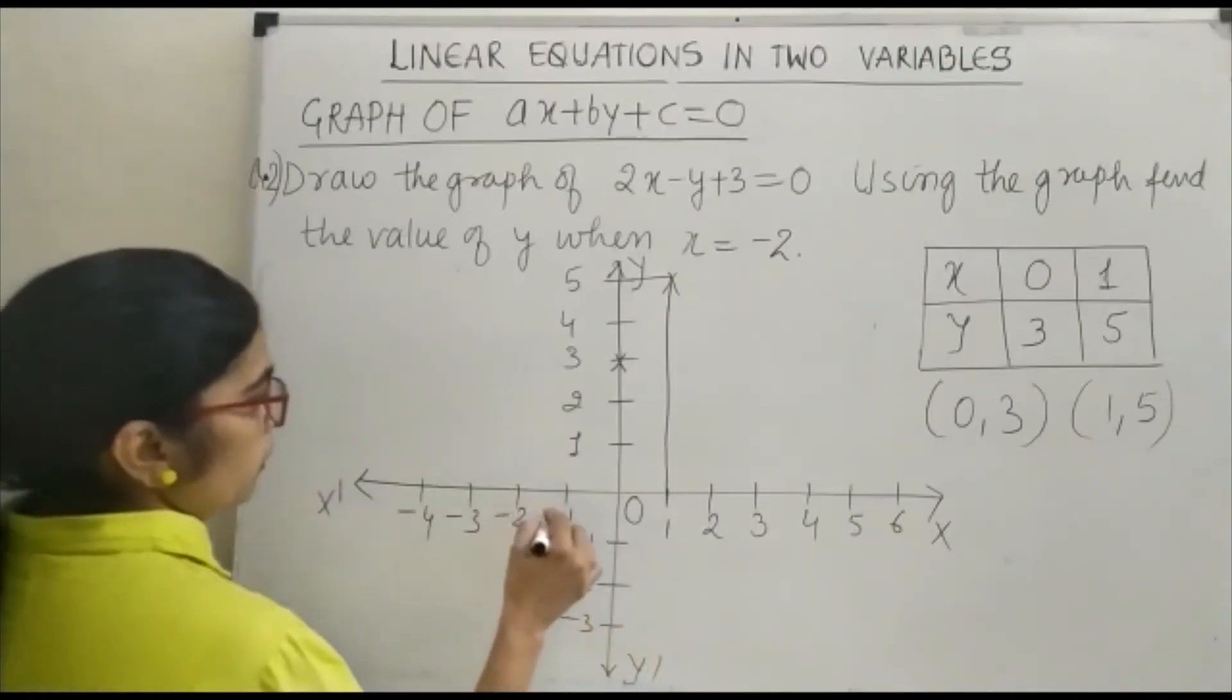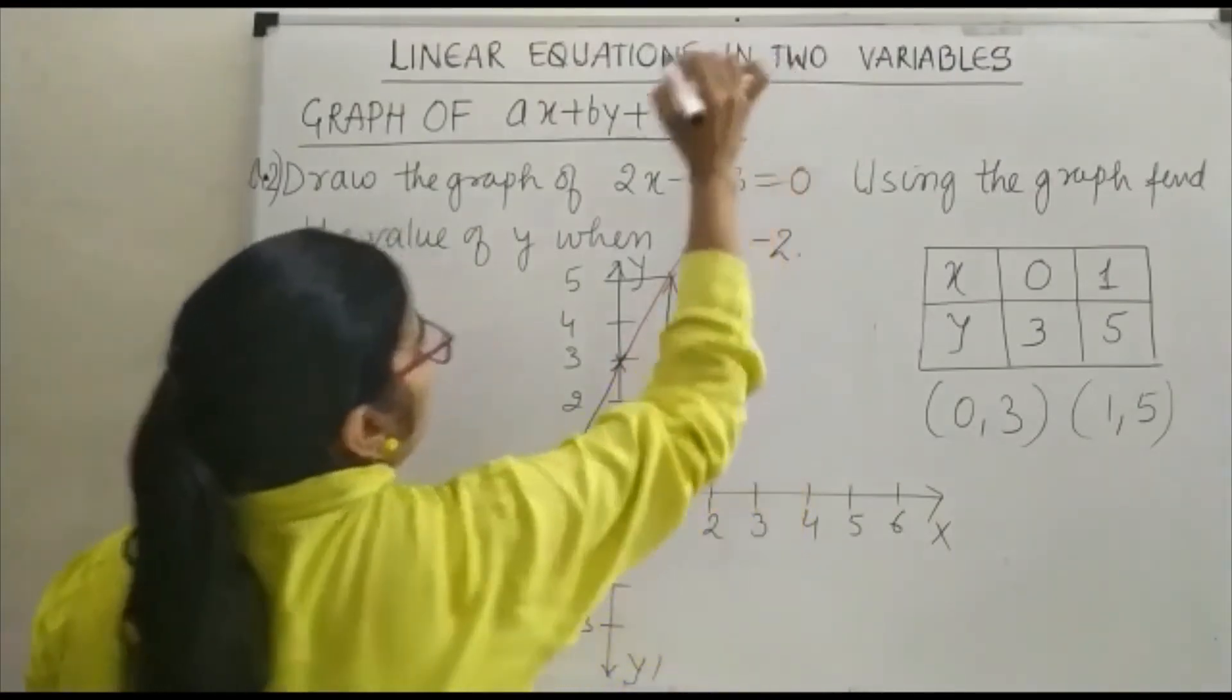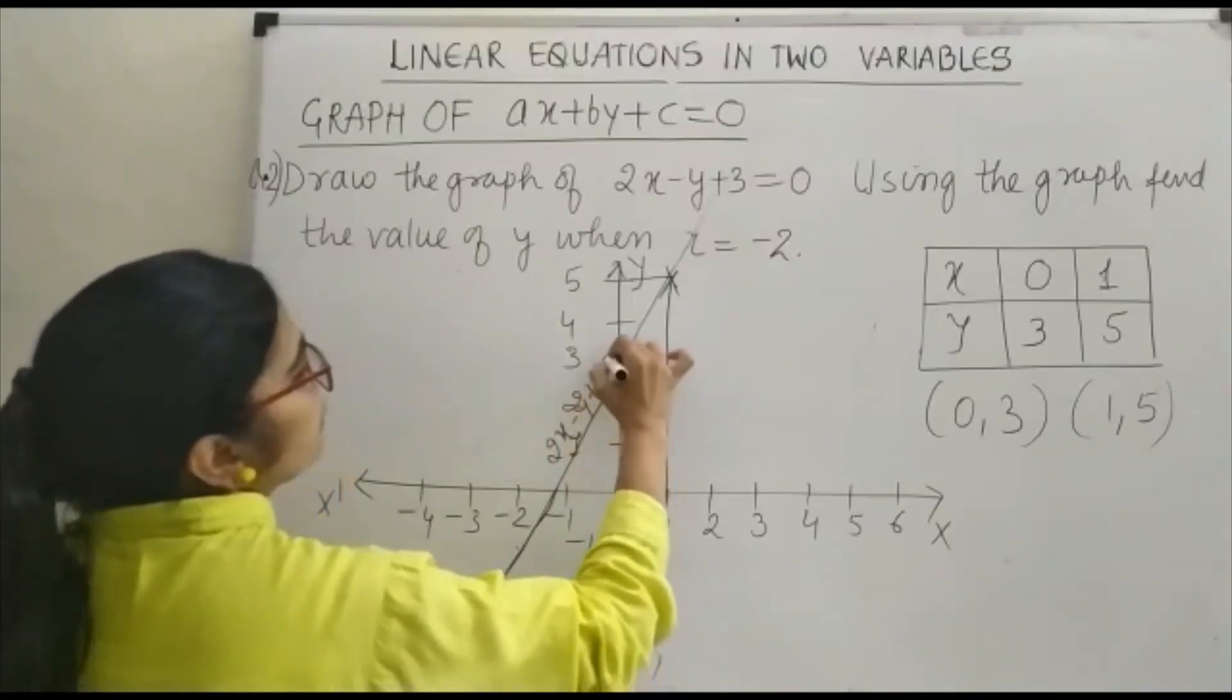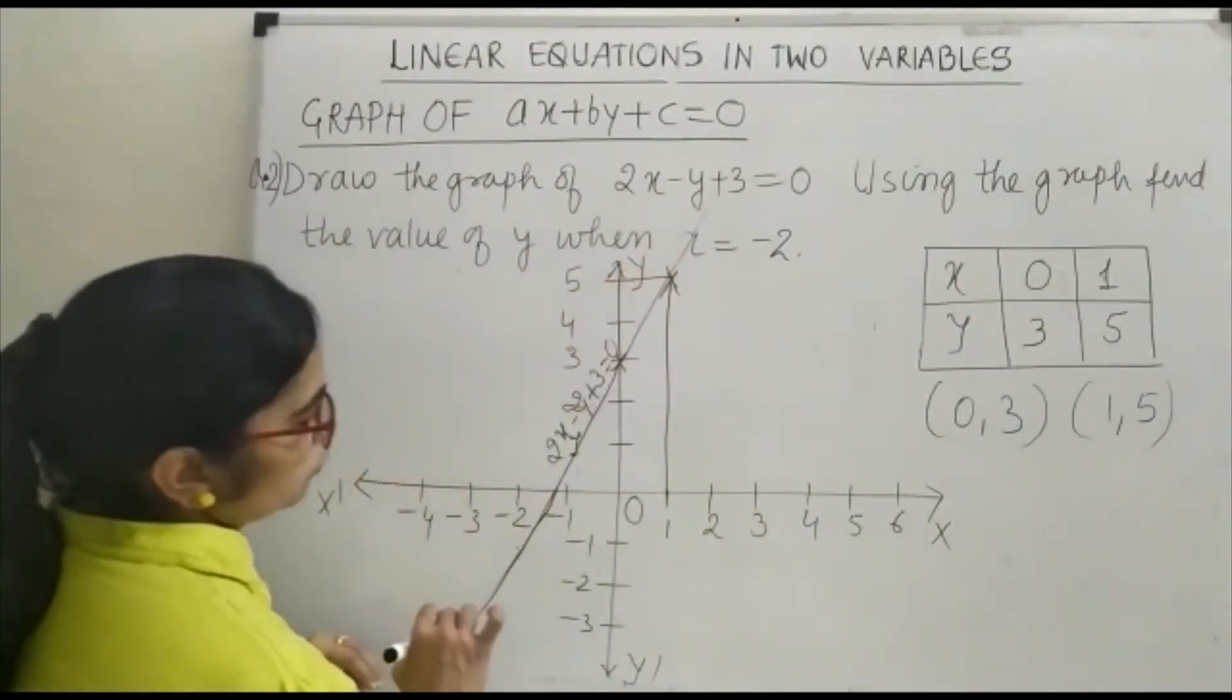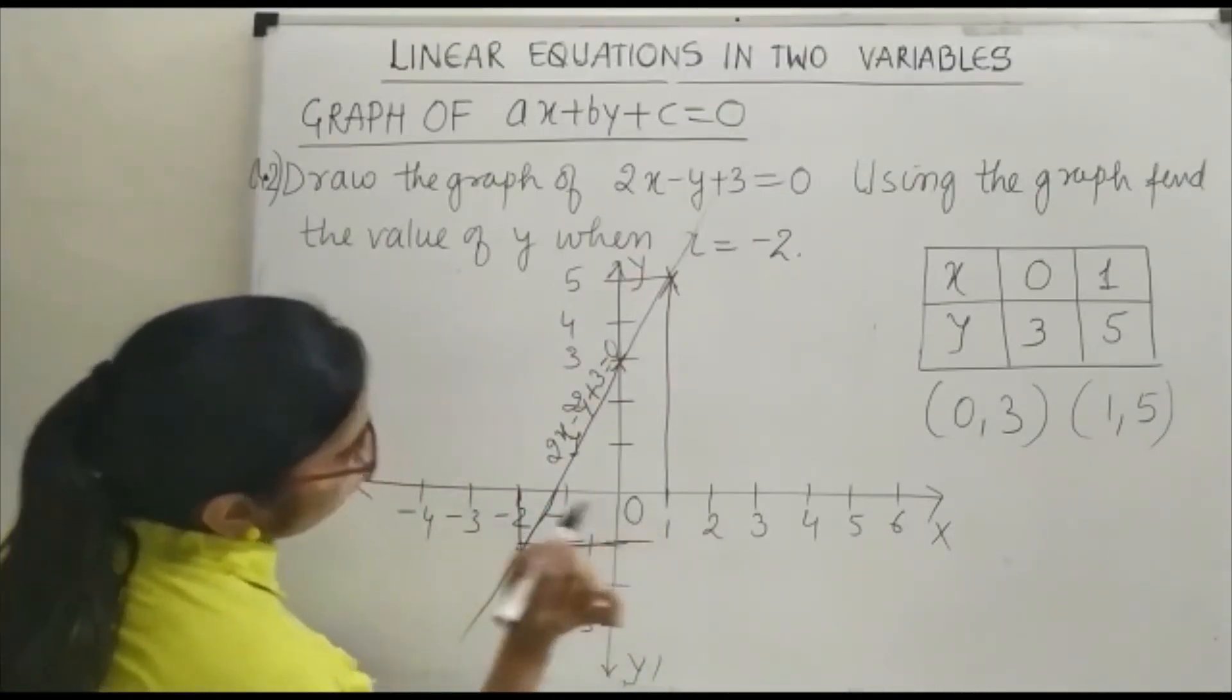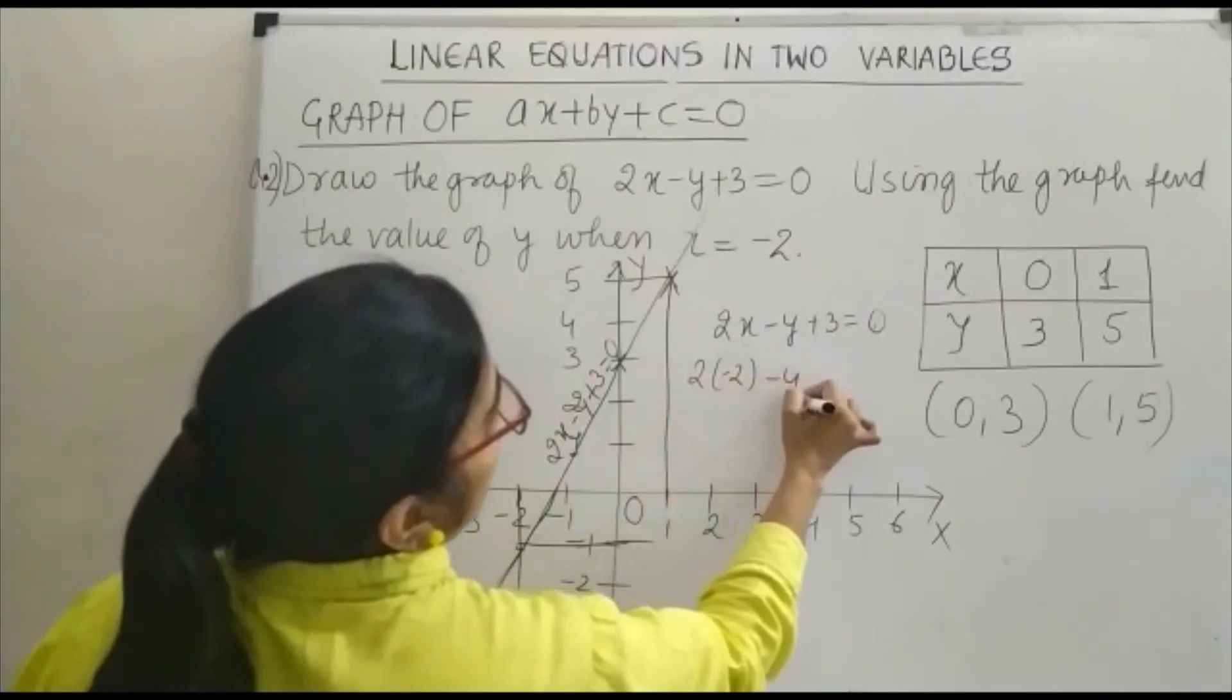Now, let us join them. This line is 2x minus y plus 3 equals 0.